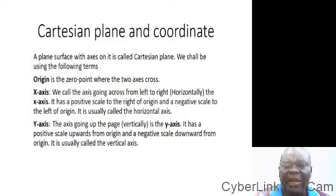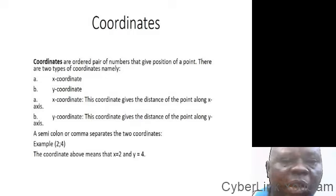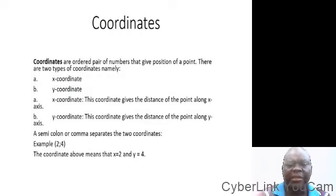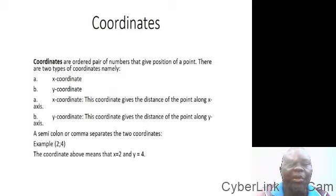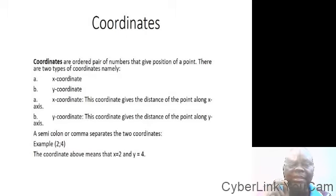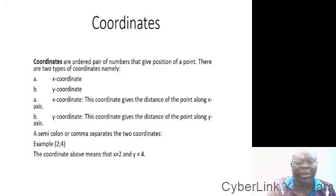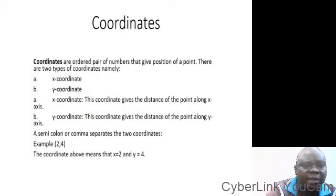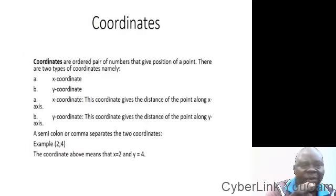Now let us look at coordinates. What is a coordinate? A coordinate mainly has two numbers that show the position of y and x. In writing a coordinate, we use a bracket. We say a coordinate is an ordered pair of numbers. We have two types of coordinates: the x-coordinate and the y-coordinate.